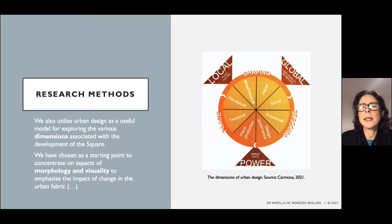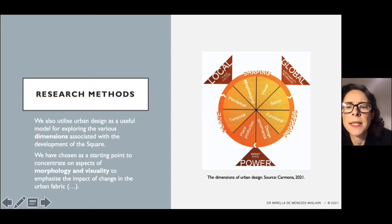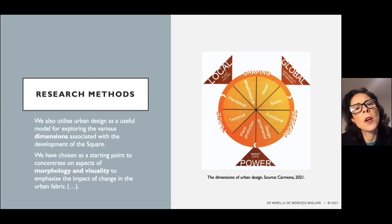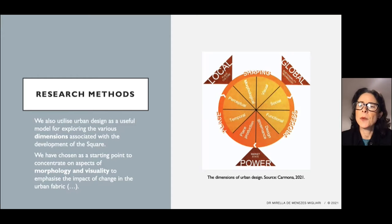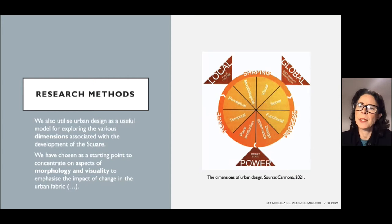We also utilize urban design as a useful model for exploring the various dimensions associated with the development of the square. Looking at the chart on the right-hand side, we can see urban design provides six key dimensions: temporal, perceptual, morphological, visual, social and functional — all of which are related to place production and design governance. We have chosen as a starting point to concentrate on aspects of the morphological and visual dimensions, to emphasize the impact of change in the urban fabric and the opportunity this has created for recent design interventions.